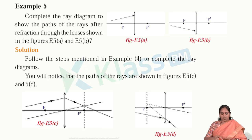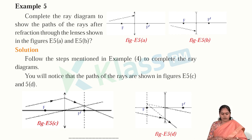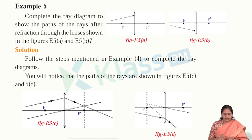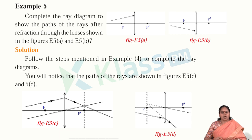Example 5: Complete the ray diagram to show the paths of rays after refraction through the lens shown in the figure. Follow the steps from Example 4. We draw from source to incidence on the lens, the ray converges at a place; another ray passes through the optic center P. Drawing a vertical line at the focus and finding where it intersects the principal axis gives the image formation point.